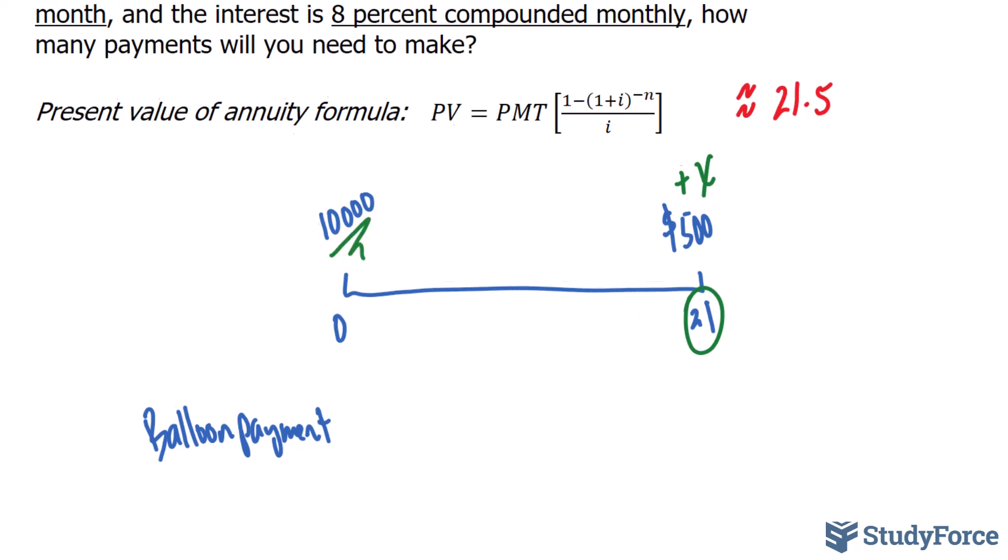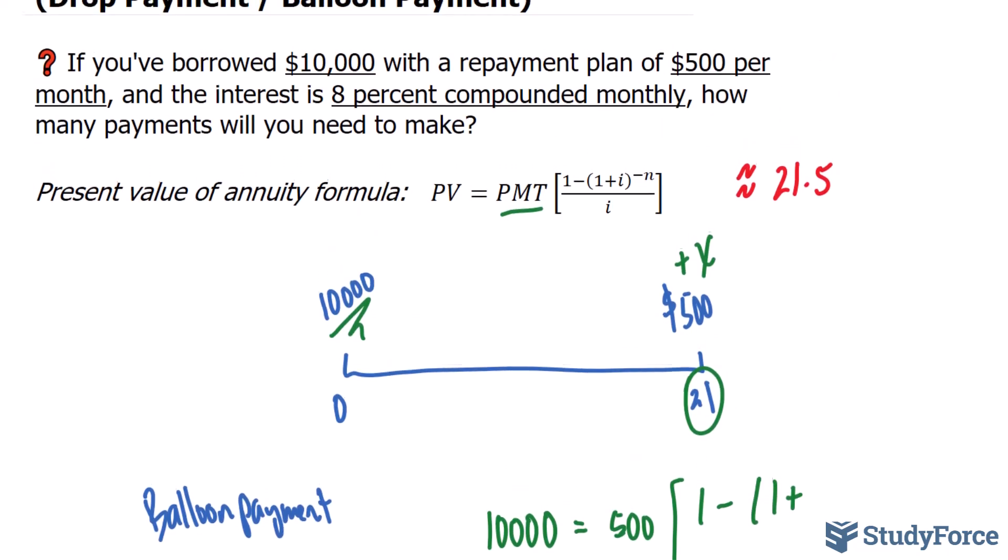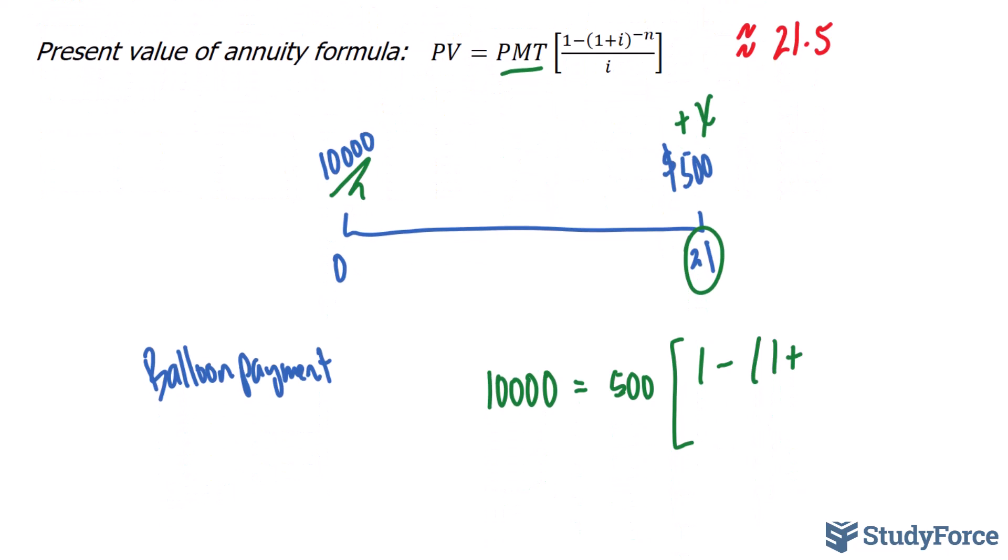Let's look at this mathematically. We know that the present value, the loan itself, is $10,000. The payments represented by PMT in this formula is $500. We also have 1 take away 1 plus the interest, which was 8% compounded monthly. So we take 0.08, our nominal interest, and divide it by 12, the number of periods in a year.